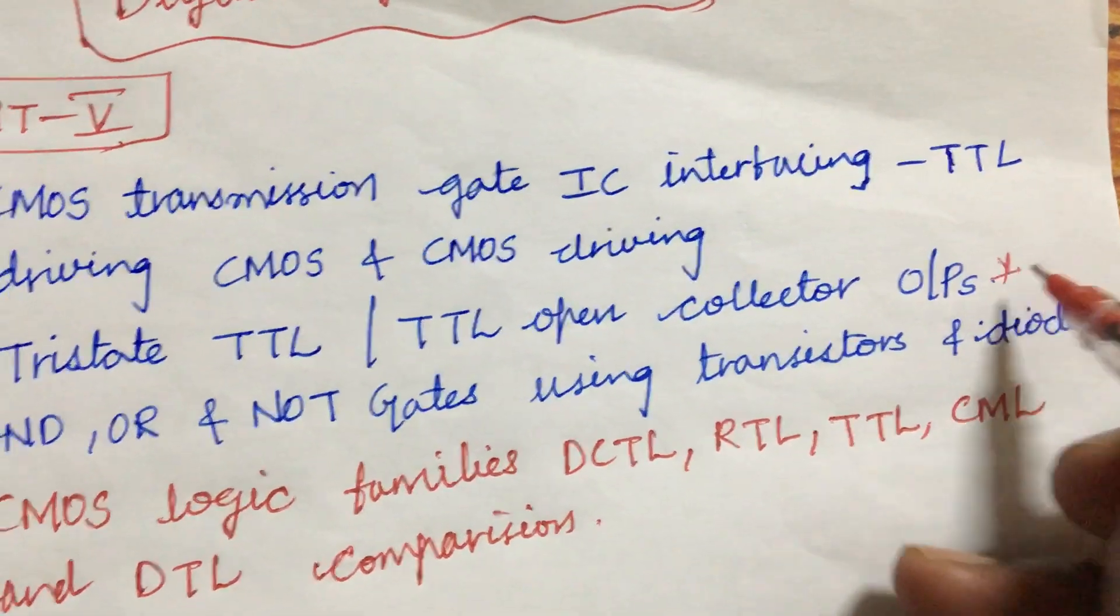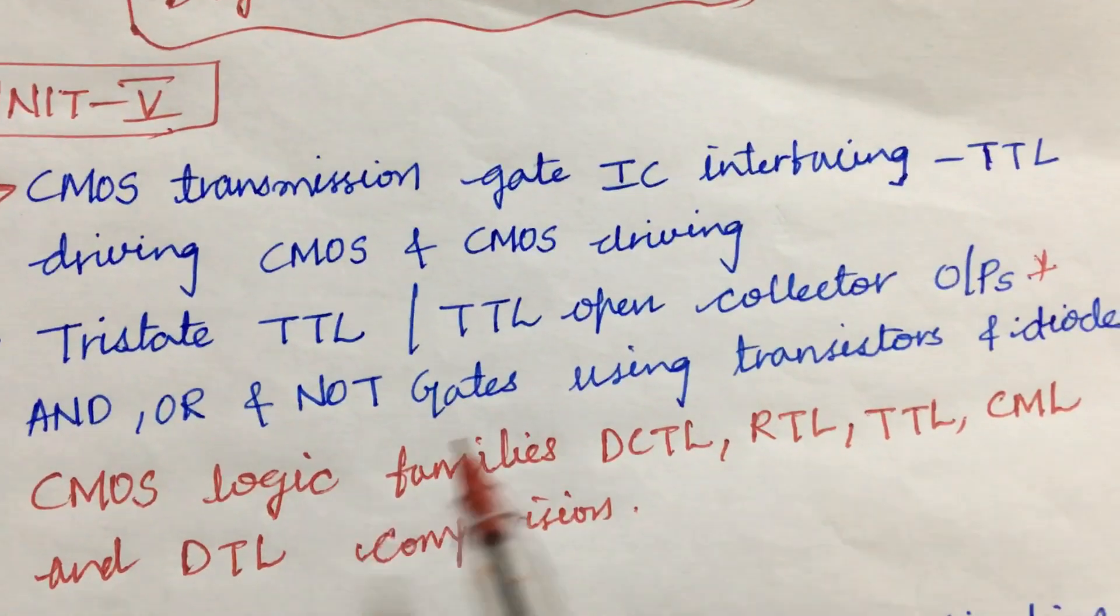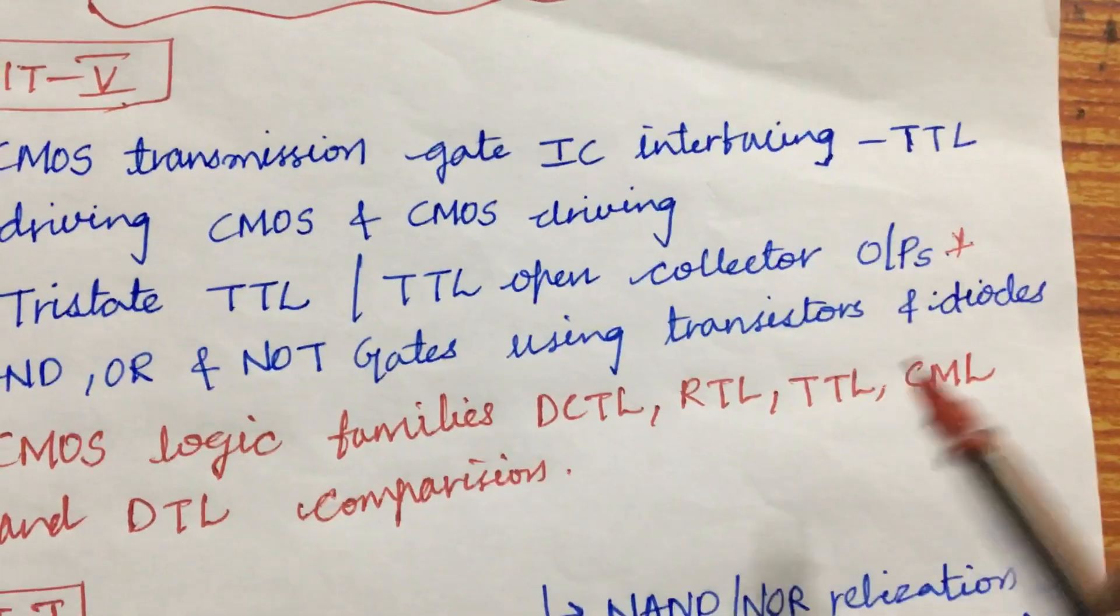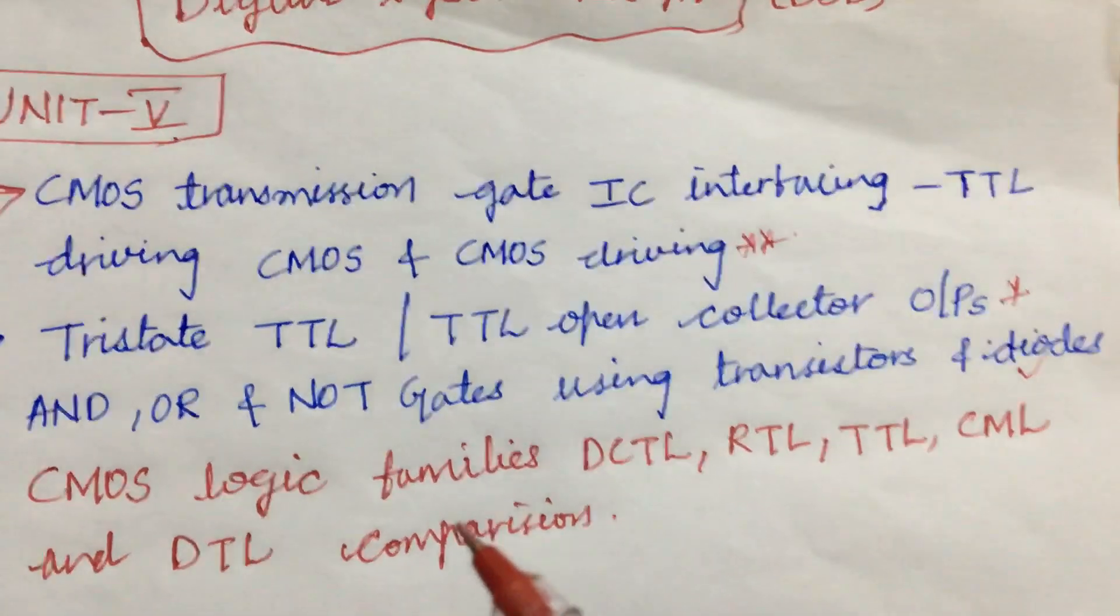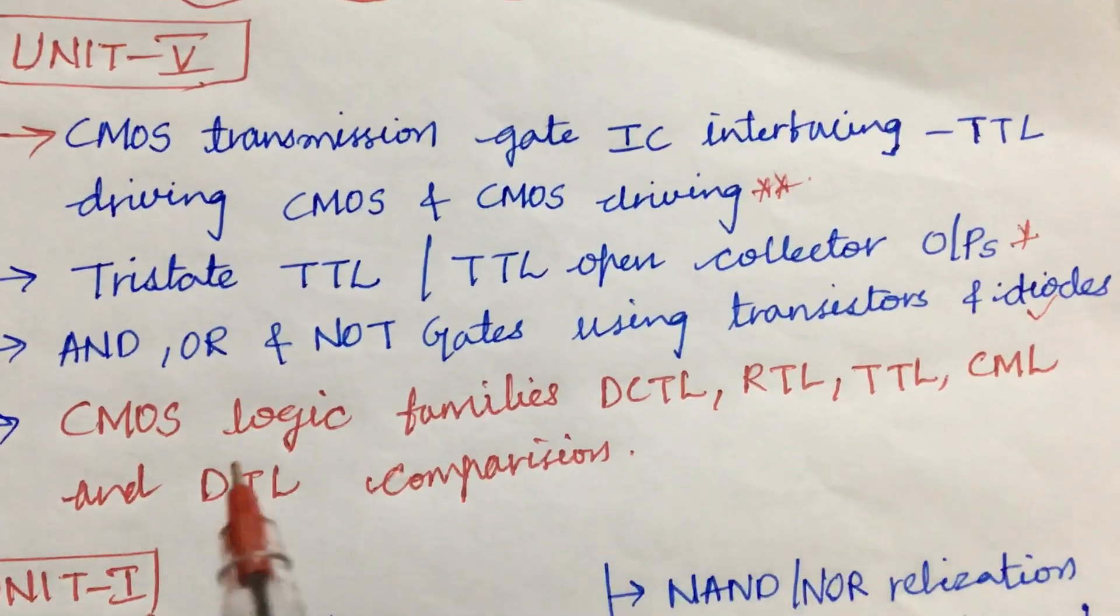Later, tri-state TTL or TTL open collector outputs, and OR and NOT gates using transistor and diodes may also be one of the very important questions. Do not expect direct 15 marks; it is a combination of 7 as well as 8.